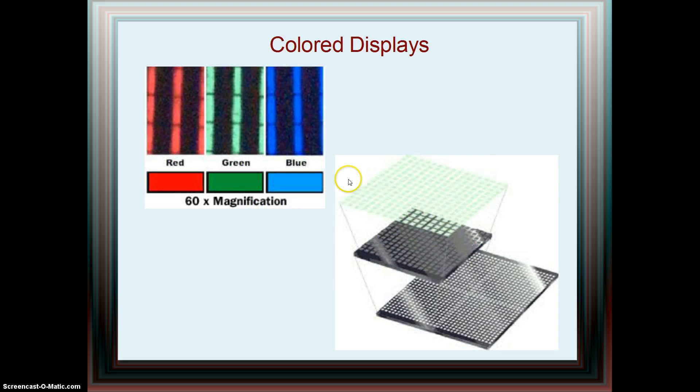The way color displays work for LCDs is that for each pixel created by the grids of columns and rows of electrodes, there are three subpixels in each pixel with a red filter, a green filter, and a blue filter.